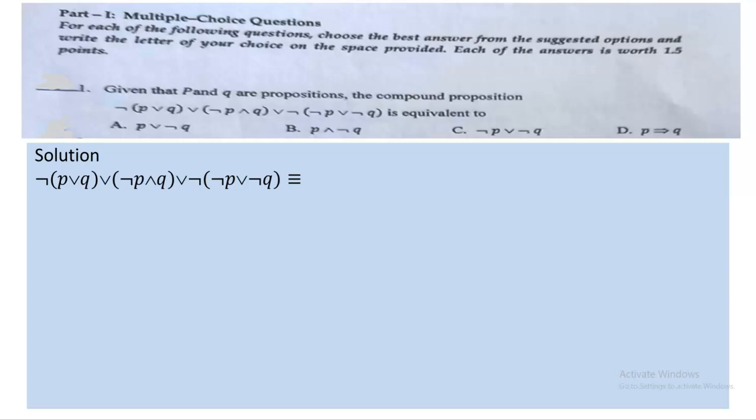Beginning with the first one: given that P and Q are propositions, you are asked to find the simplified form of this compound proposition. What you need to do is use the properties you studied in the classroom in order to find the final output of this compound proposition. The expression is: negation of P or Q, or negation of P and Q, or negation of negation of P or negation of Q.